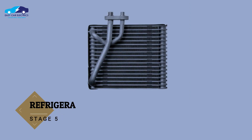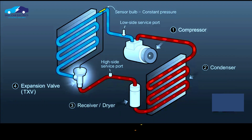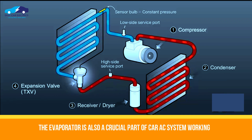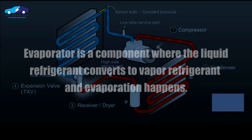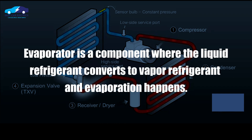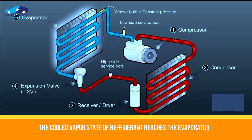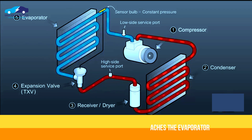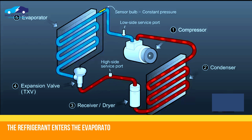Stage 5: Refrigerant travels through the evaporator. The evaporator is a crucial part of the car AC system. It is the component where the liquid refrigerant converts to vapor refrigerant and evaporation happens. The cooled vapor state of the refrigerant, coming from the expansion valve orifice tube, reaches the evaporator and enters the evaporator coil.